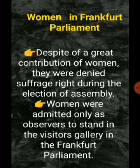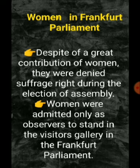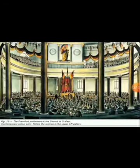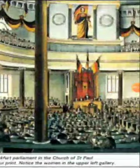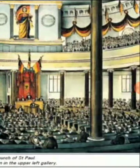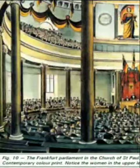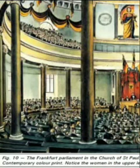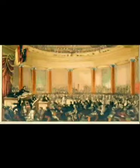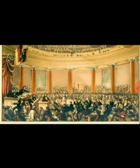Women were engaged in political parties and formed groups, but they had no rights. They were not allowed to participate in the parliament itself — instead, women were only permitted to watch from the upper left gallery. As visible in the image of the Frankfurt Parliament, women can be seen seated in the upper left gallery, which reflects their limited and observer-only role.